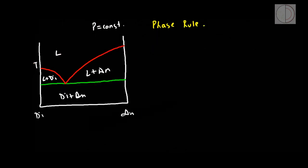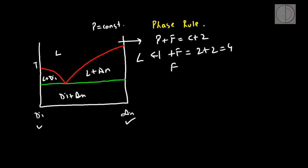Now let us apply the phase rule on the system, starting with the liquid field. The phase rule is given by P plus F equals C plus 2. In the liquid field, only one phase is stable — the liquid phase. The number of components is 2: anorthite and diopside. So degree of freedom comes out to be 3. Since pressure is constant, we graphically reduce the degree of freedom by one, leaving us with 2. Hence this liquid field is a divariant field.